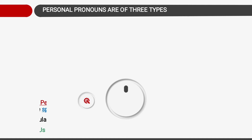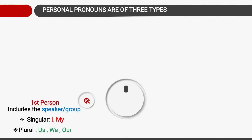First person includes the speaker or group — about who is speaking. For singular we use 'I' and 'my'. For plural we use the pronoun words 'us', 'we', 'our'.